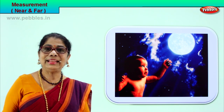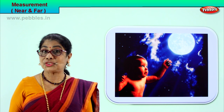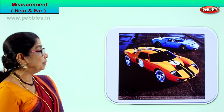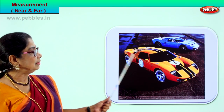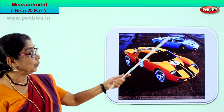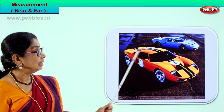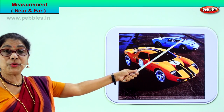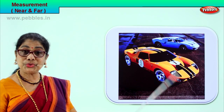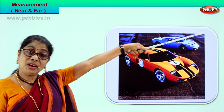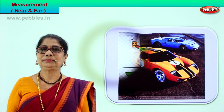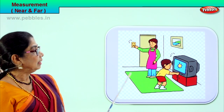Now you understand what is near and far. Here are the two measurements - near and far. Here is a little car which is near. Can you see another car far away? This car is near you, that one is far away. What is close to you is near, what is far away is far.